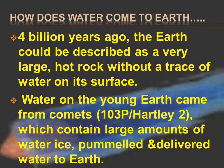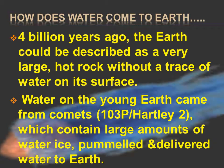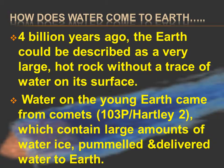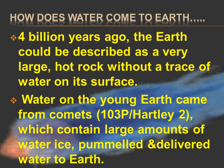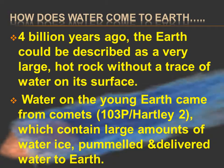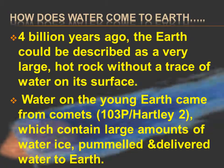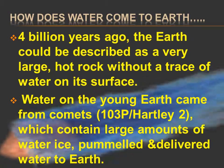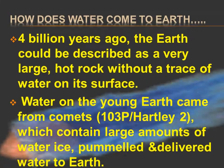Water on the young Earth came from comets, which contained a huge amount of water and ice, and delivered water to Earth.